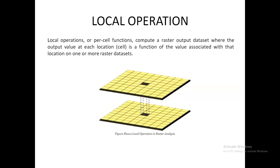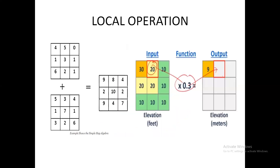In local operation, you are going to work on the spatial data — only one particular cell at a time — and you are not going to depend on any other neighborhood cell or any other cells present in that particular spatial data. We can also see another example using a matrix. You are going to have two matrices and work on addition — adding the same column and same row of two different matrices. In matrix one, the first row first column is four; in the second matrix, the first row first column is five. Four plus five equals nine. When working on that cell, in each matrix, you concentrate on only one single cell.